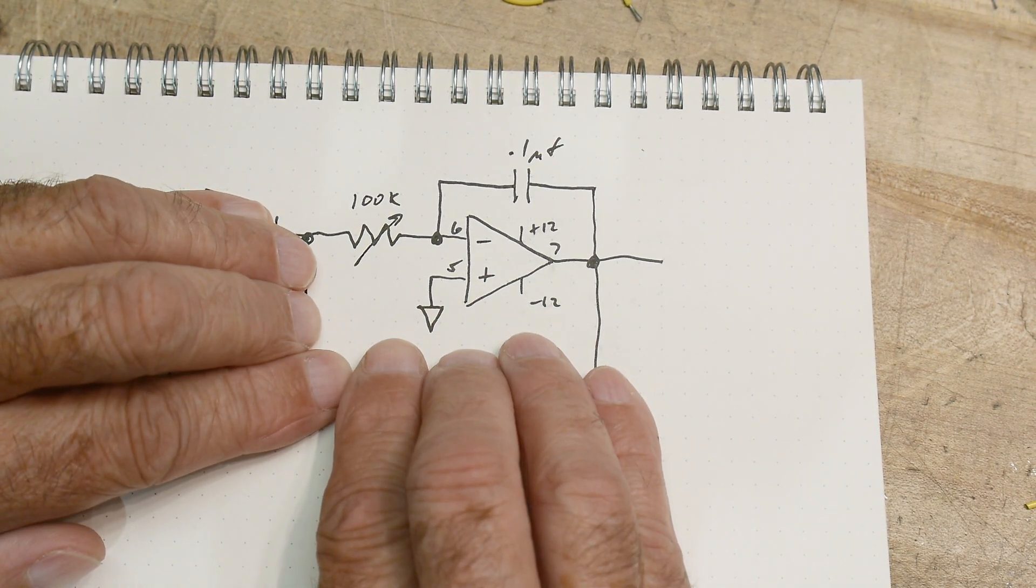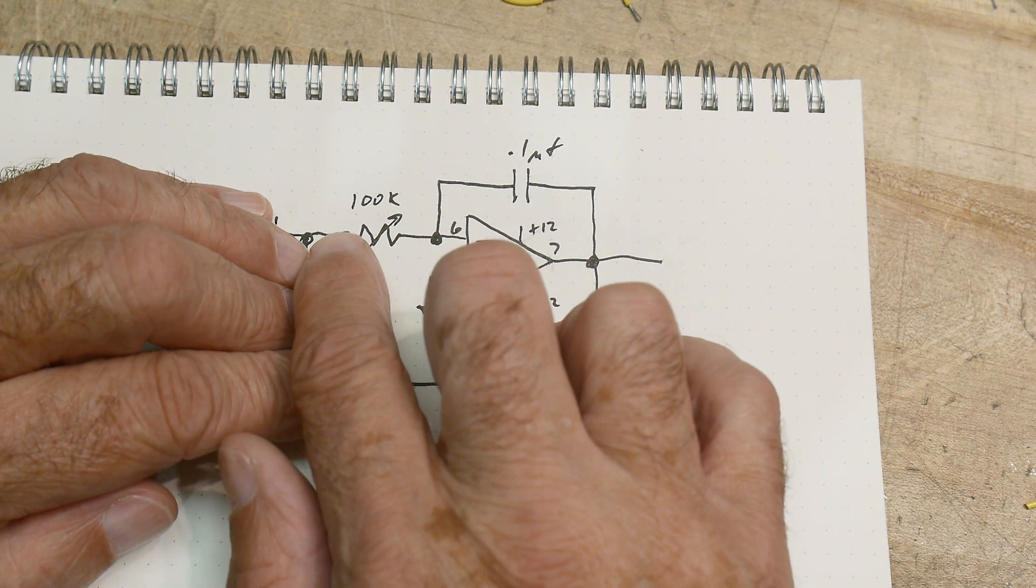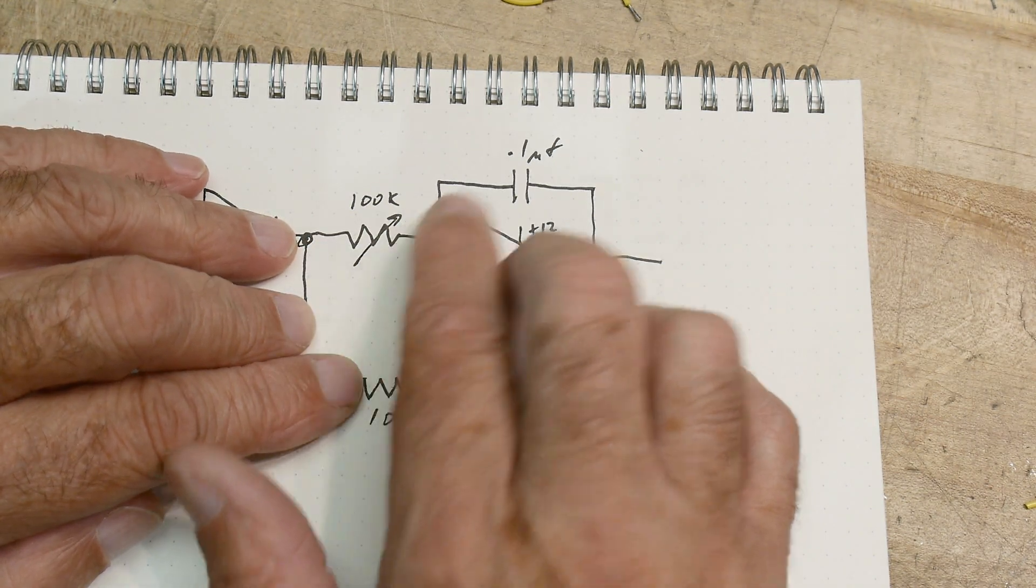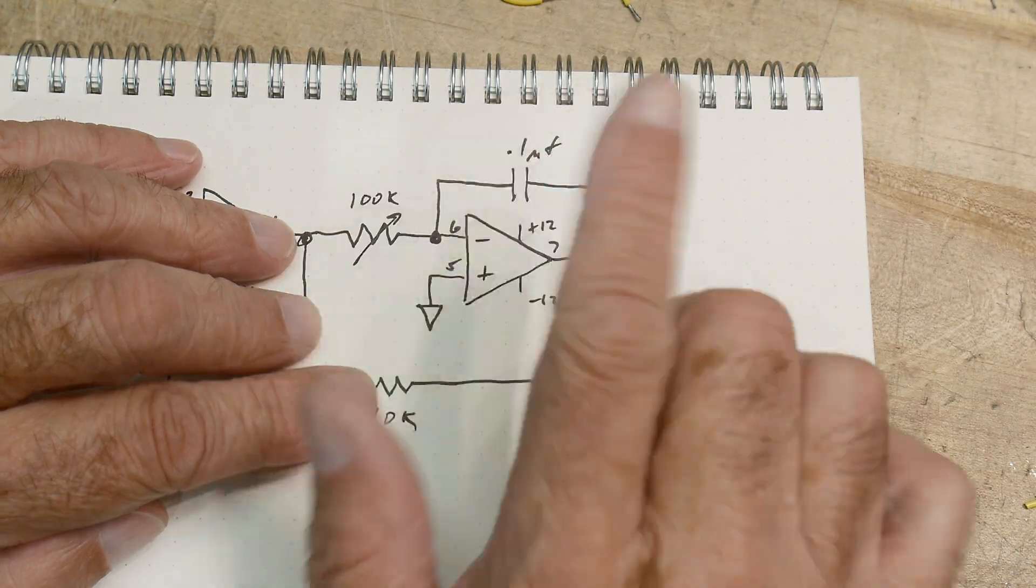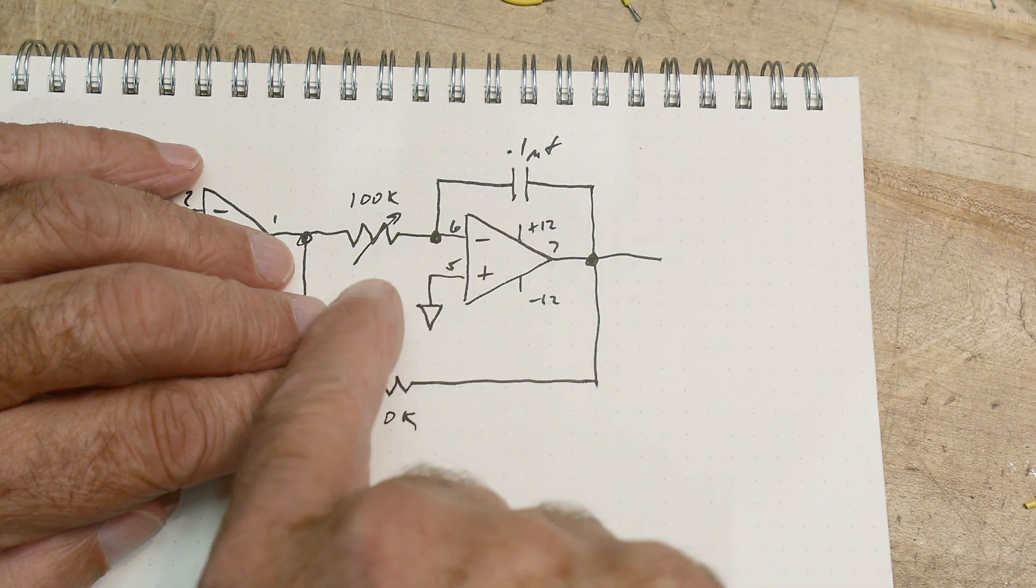This is kind of a two-section device. This section right here should look like an integrator. You put a voltage here, a current comes through this resistor, and that current charges a capacitor—constant, constant, constant current—and you'll get a straight line.